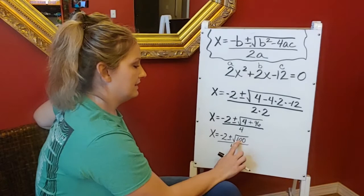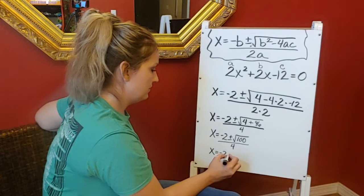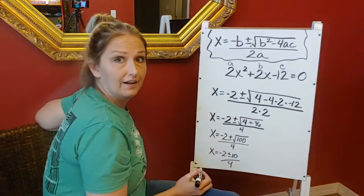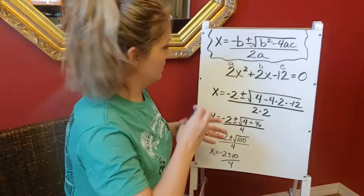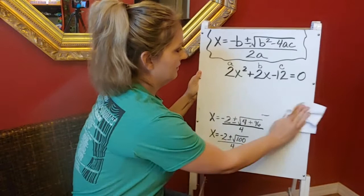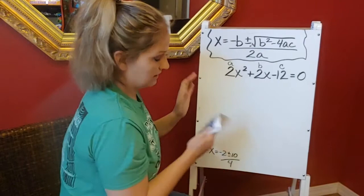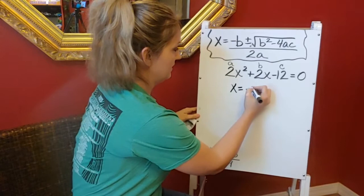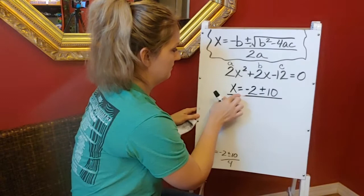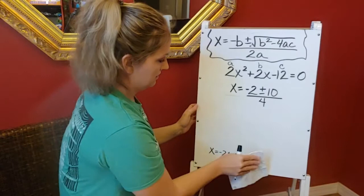Now I'm going to take the square root of 100. So x equals negative 2 plus or minus 10, all over 4. I'm running out of room, so I'm going to rewrite this up here: x equals negative 2 plus or minus 10, all over 4.